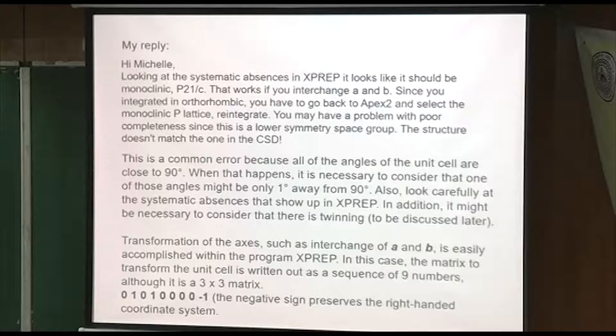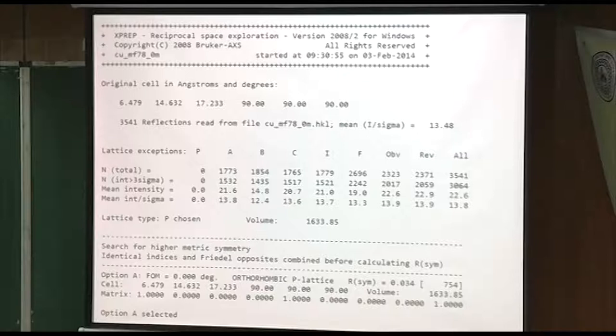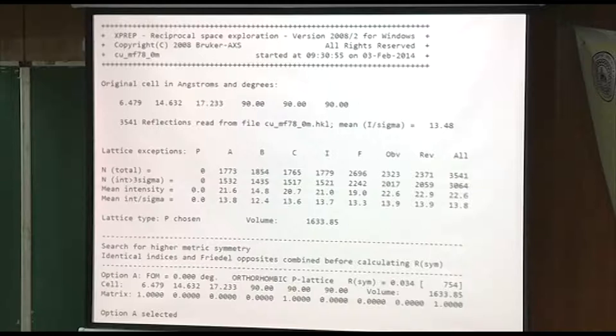Here's X-PREP with her orthorhombic cell. The orthorhombic A, B, and C, you organize them smallest to largest. So it went 6, 14, 17. You can see the mean intensity over sigma, this row here.